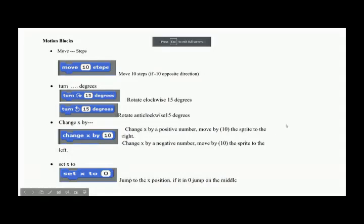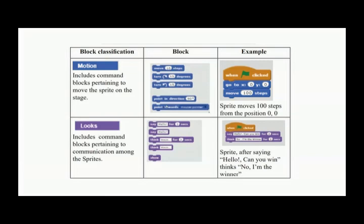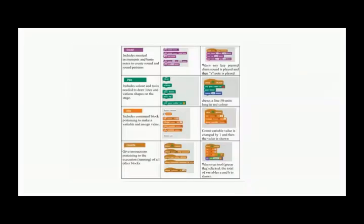We have these motion blocks. Now we will check these blocks and then make a program. This is the script area — you have to drag the blocks here. The purple color blocks are called 'looks' blocks. They include commands for communication among sprites, so if you want to show something, you can use these say blocks.